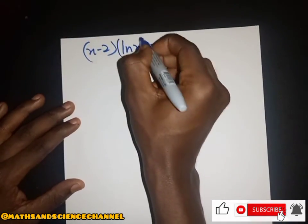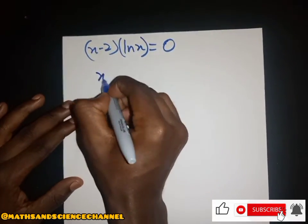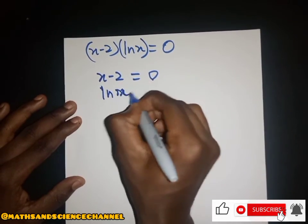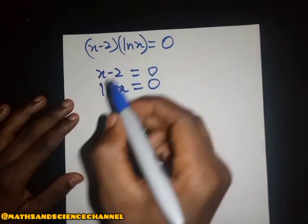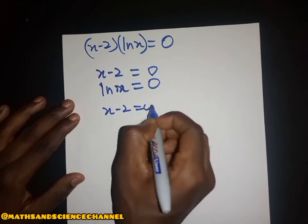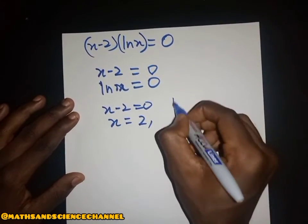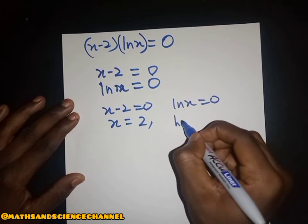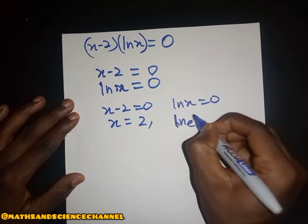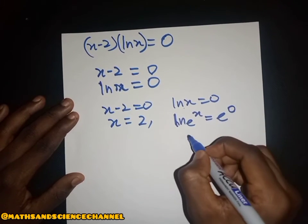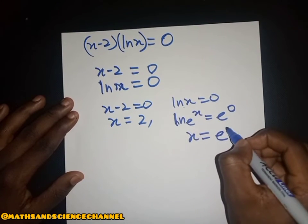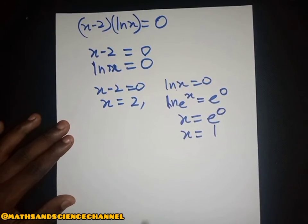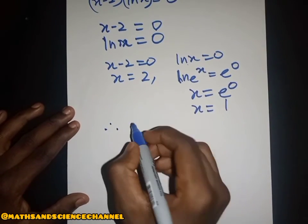When we further simplify, we get x minus two times ln(x) equals zero. Now ln(1) equals zero. So we can take each factor separately: x minus two equals zero, which gives x equals two, and also ln(x) equals zero, which means x equals e to the power zero, so x equals one.